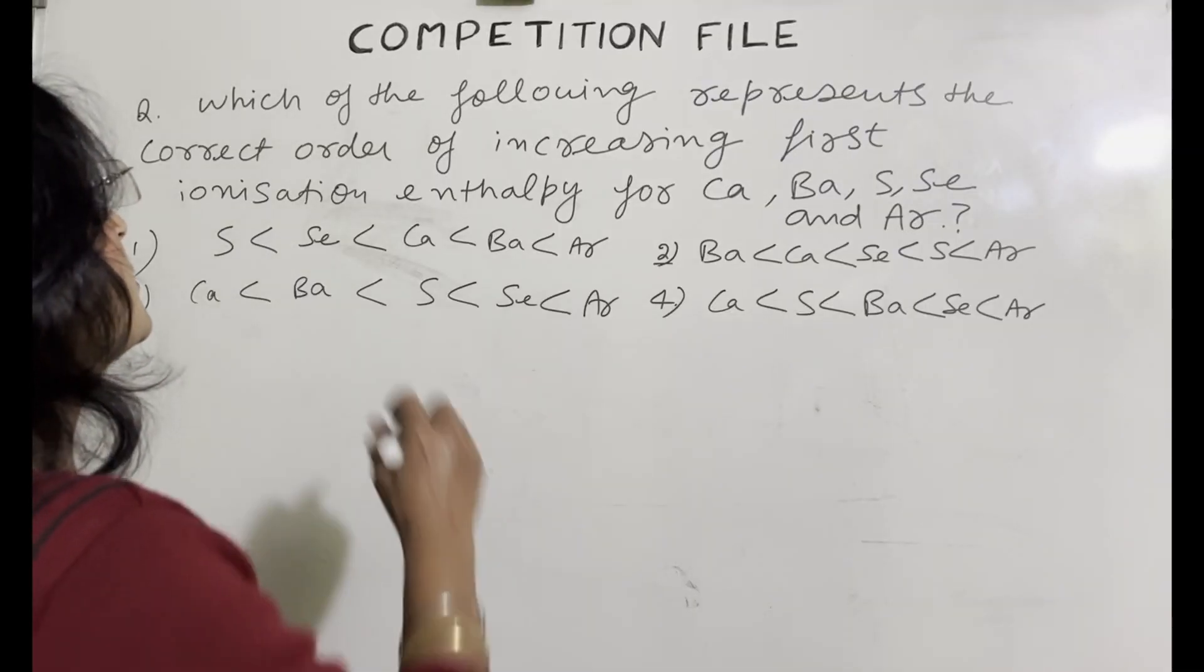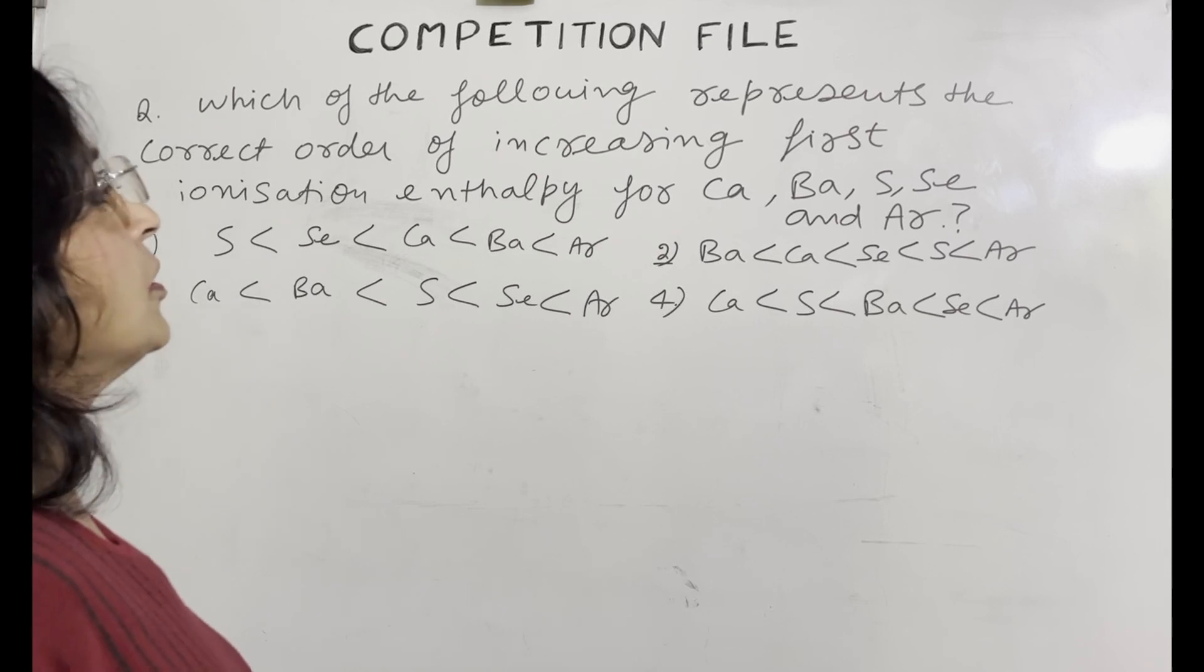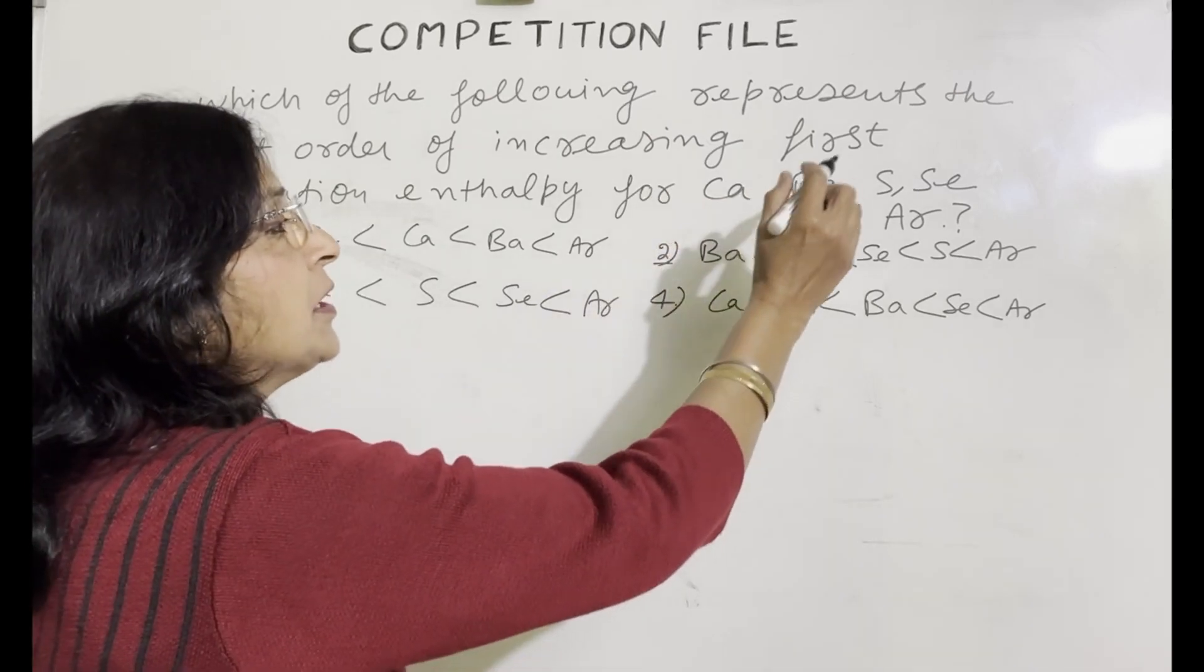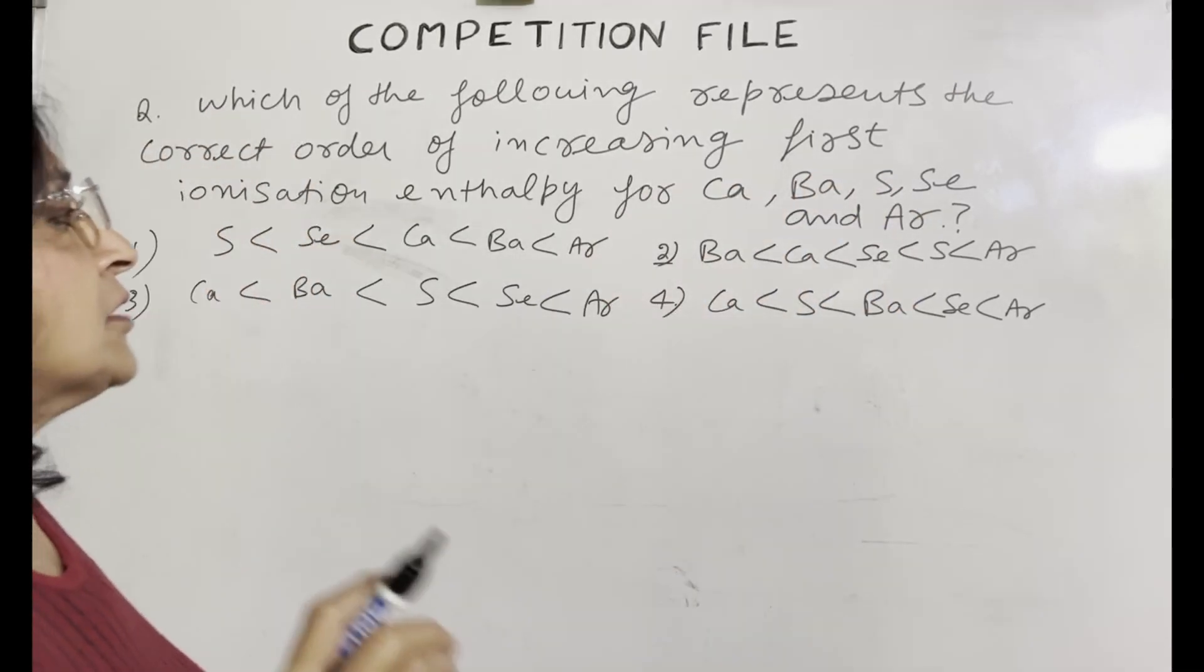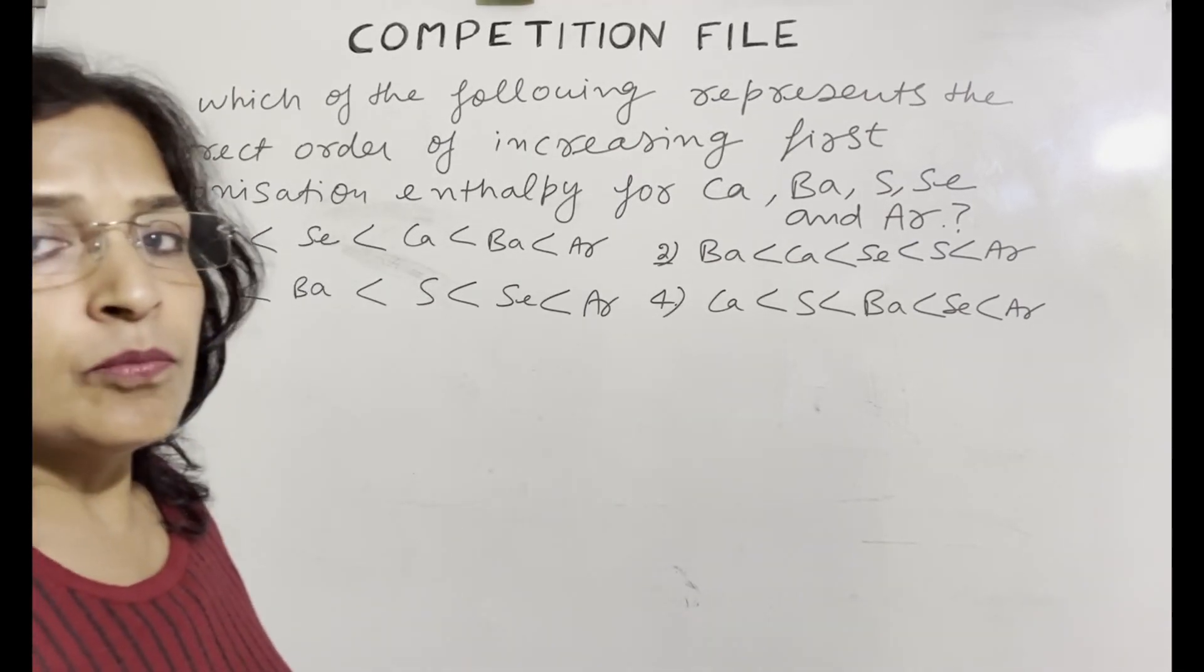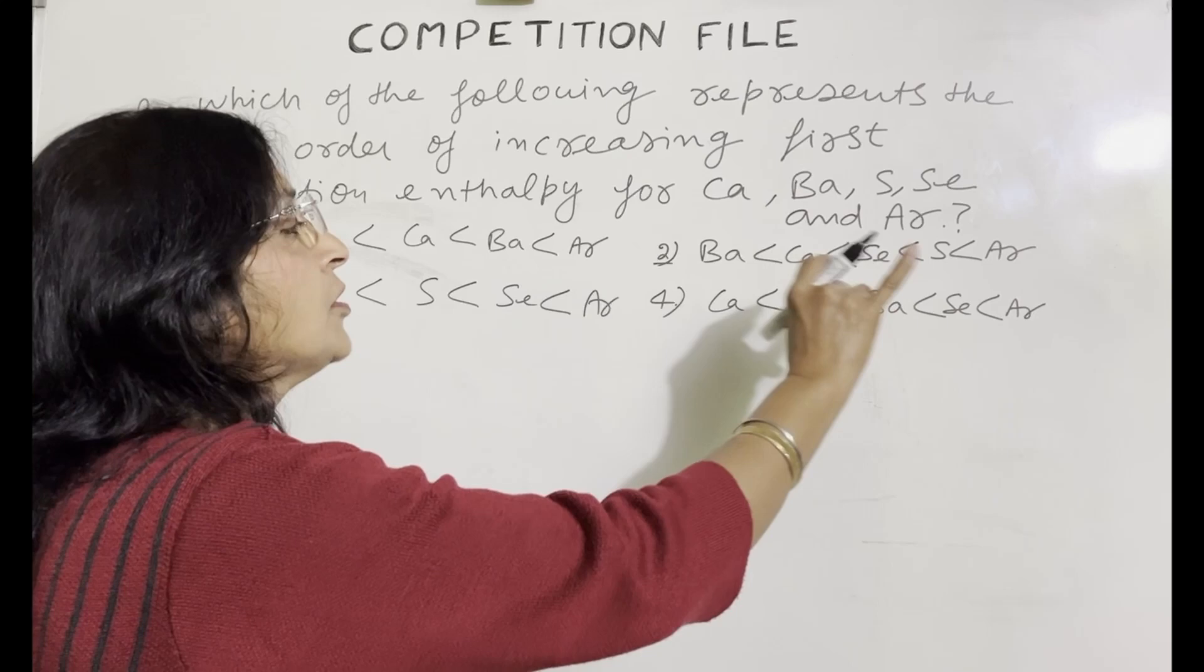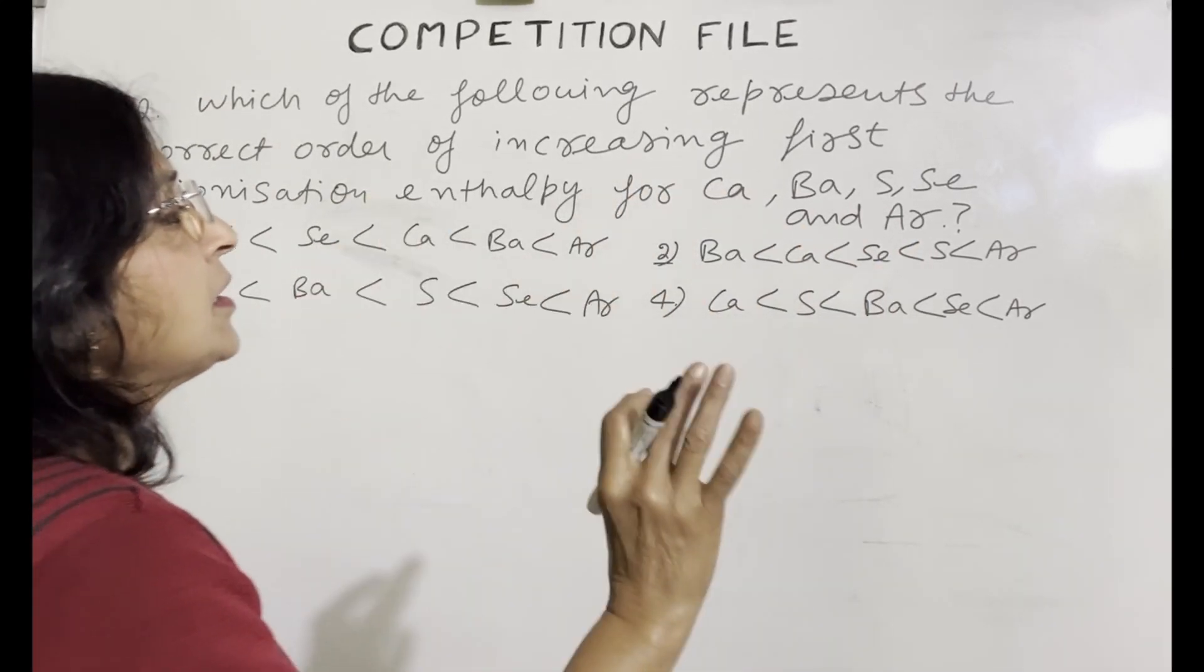Next question is, which of the following represents the correct order of increasing first ionization enthalpy for calcium, barium, sulfur, selenium and argon? These are the four choices and we have to find which is correct. Argon is a noble gas, its ionization enthalpy will be the highest and in all the four choices, argon's ionization enthalpy is the highest.